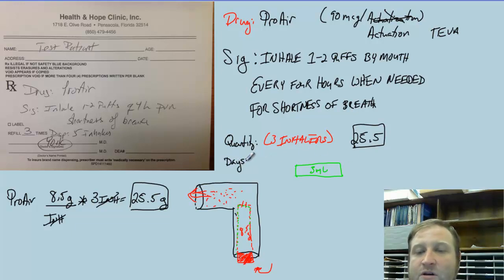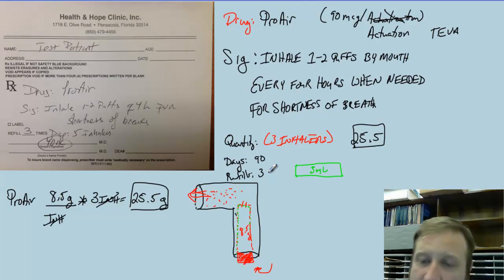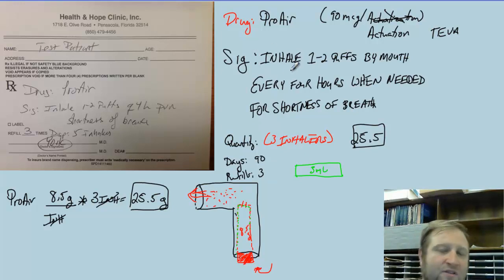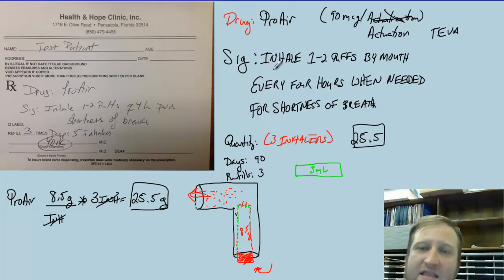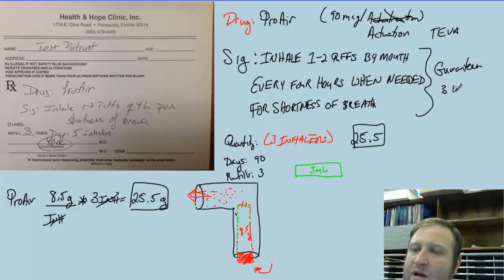The days for this prescription will be a value of 90. And refills — we'll get this three times more after our initial order comes in. Just be cognizant of this when we do the inhalers. This SIG will generate every single time automatically when you write for the ProAir using the EMR, because this SIG guarantees three inhalers.